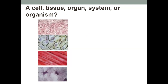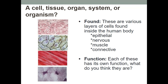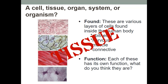Here are some pictures showing various layers of cells found within the human body. You can see nuclei in there. There's epithelial, nervous, muscle, and connective tissue. Each of these has its own function. Is it a cell, a tissue, an organ, an organ system, or an organism? Tissue is correct — give yourself a thumbs up and a pat on the back.